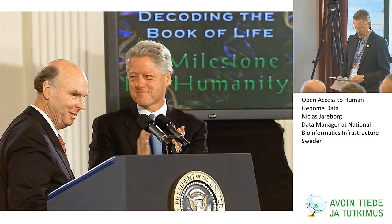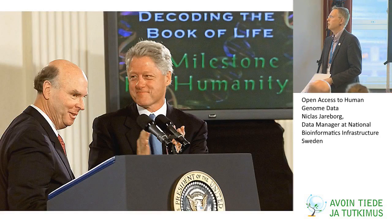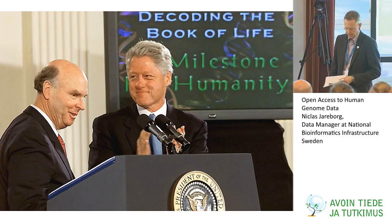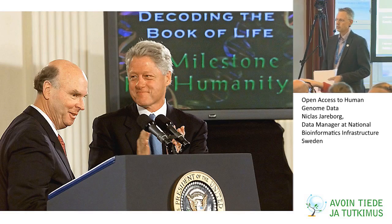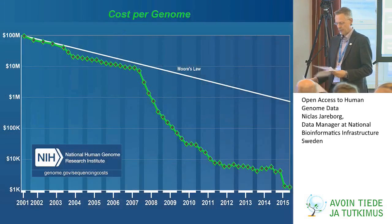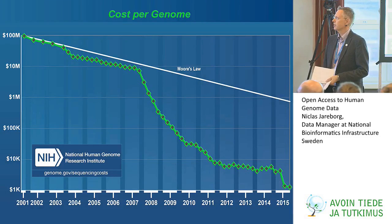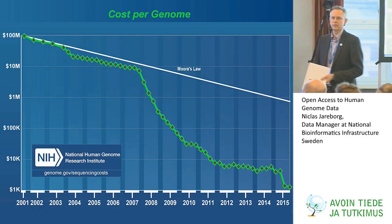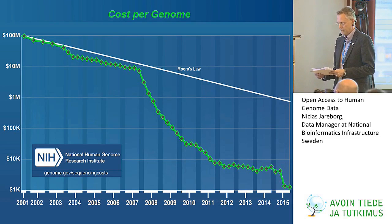The first determination of the human genome sequence was done in the 90s and published in 2003. It was a very large international effort, and it cost one billion dollars and approximately took 13 years. However, in less than 10 years ago, there was a technology shift in DNA sequencing that drastically increased the throughput of DNA sequencing.